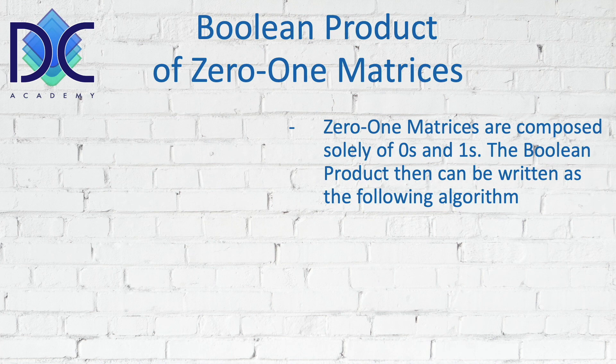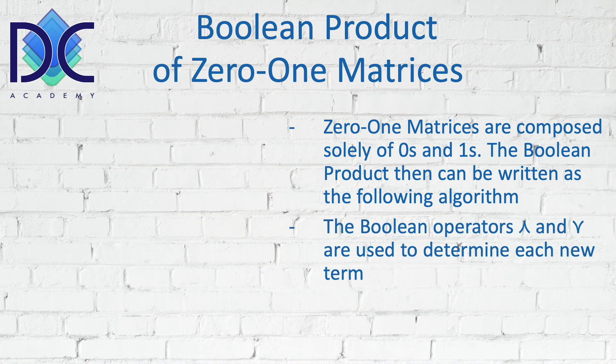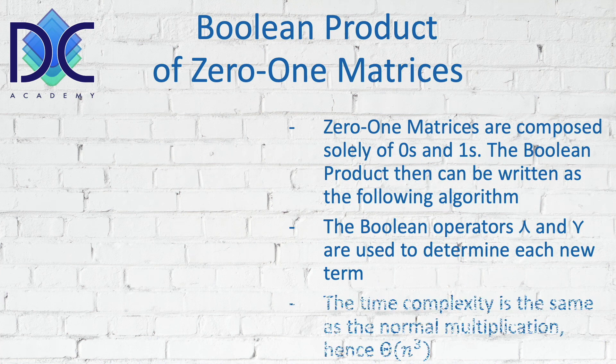0-1 matrices are in fact only composed of 0s and 1s. And we have, in fact, the Boolean product of those. And when we have the Boolean operators, we have the AND and OR operators which are used to determine each new term.